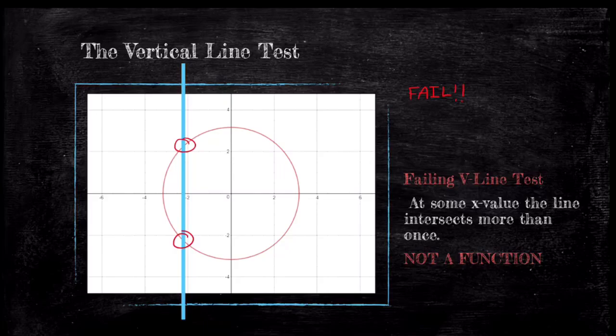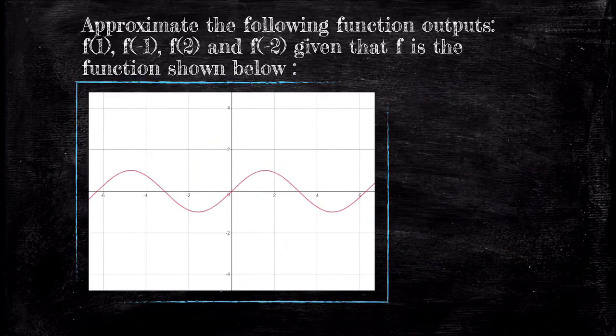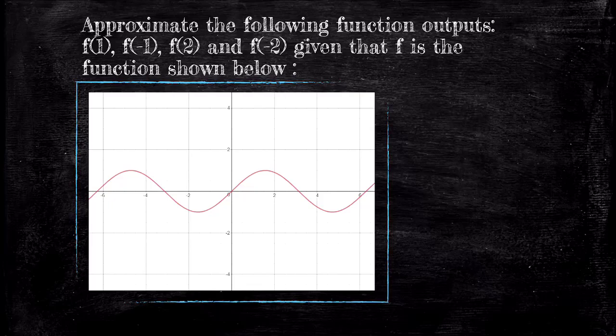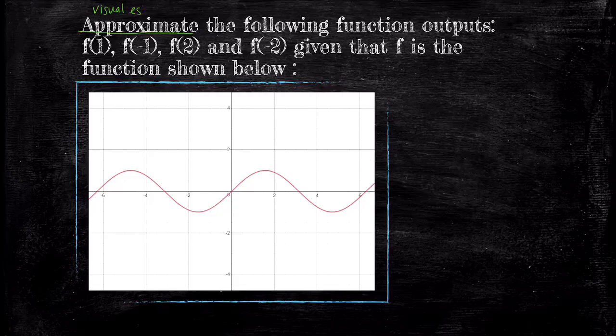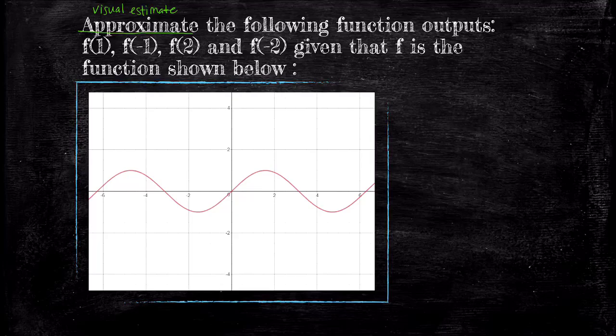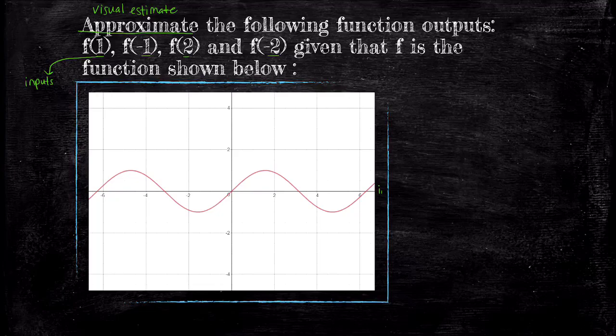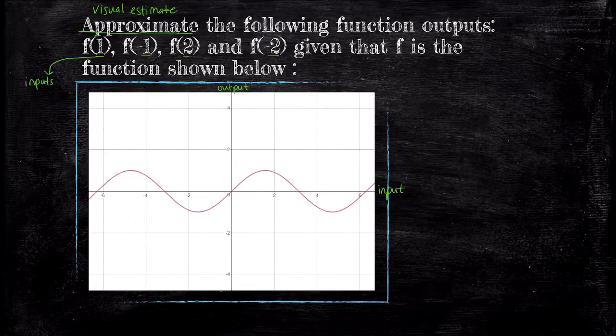Let's make sure we're all on the same page with reading graphs of functions. This prompt asks us to approximate the outputs f of 1, f of negative 1, f of 2, and f of negative 2. As you recall from algebra, a graph of a function has input values plotted as the x-coordinate and outputs plotted as the y-coordinate. So the x-axis represents the input value and the y-axis represents the outputs.